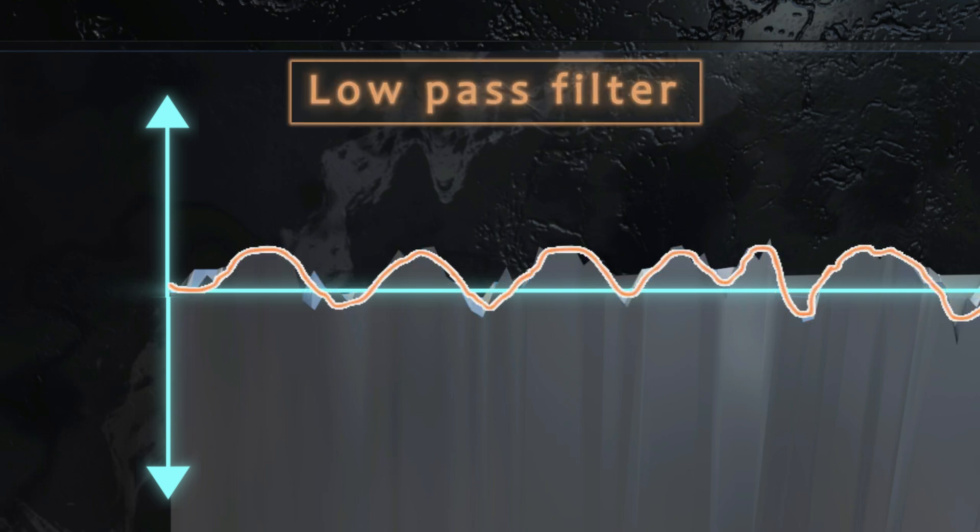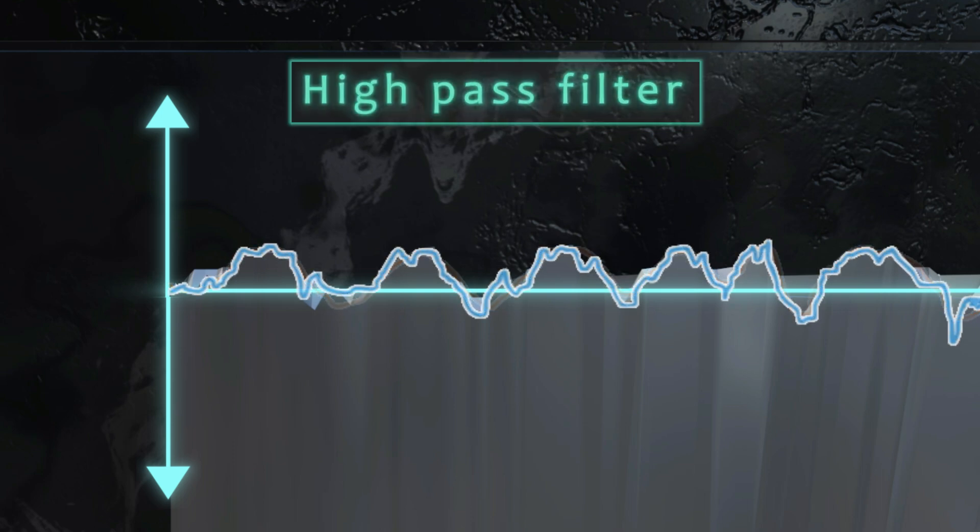Using a low-pass filter, we can represent a waviness profile smoothly without looking at roughness. And using a high-pass filter, we can see only the roughness without having the effect of the waviness.